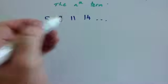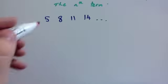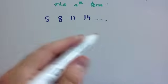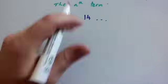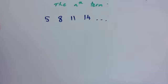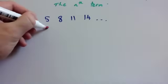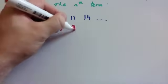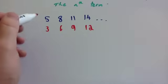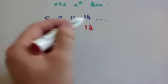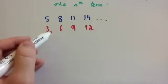You can see it's getting bigger by 3 each time. Because it's getting bigger by 3 each time, you write the 3 times tables beneath the sequence, because the 3 times tables also get bigger by 3 each time. So: 3, 6, 9, 12. We've written the 3 times tables beneath the sequence.